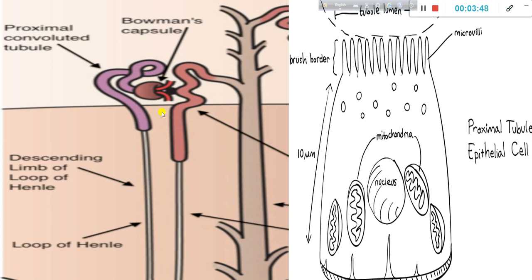The nephron is the structural and functional unit of the kidney. The nephron is the primary functional unit.